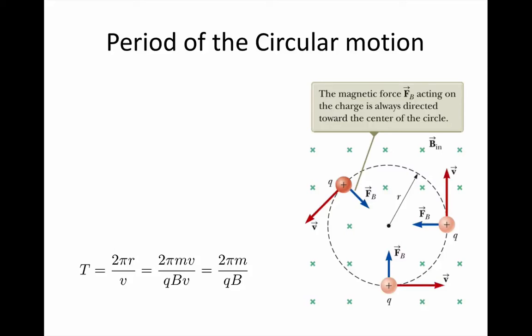To work out the period of that circular motion, we know that for constant speed, speed equals distance over time. That means that time, or period T, would equal distance over speed.